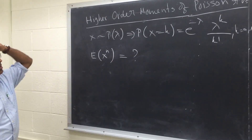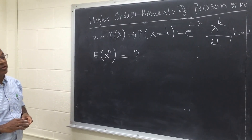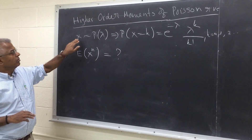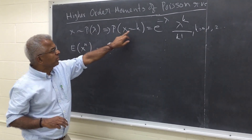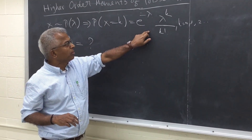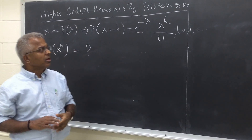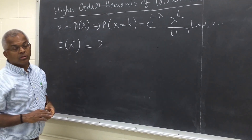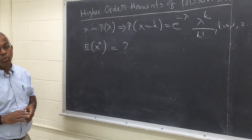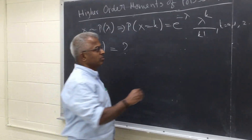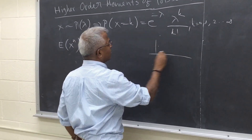Let me show you one way to find out the higher order moments of Poisson random variables. We say X is Poisson if the probability of X equal to k is e to the power minus lambda, lambda k over k factorial, where k takes all integer values 0, 1, 2, 3, and so on. So this is a discrete random variable.